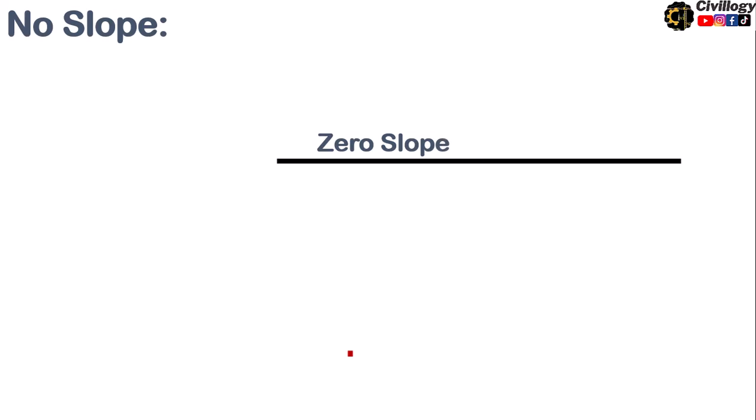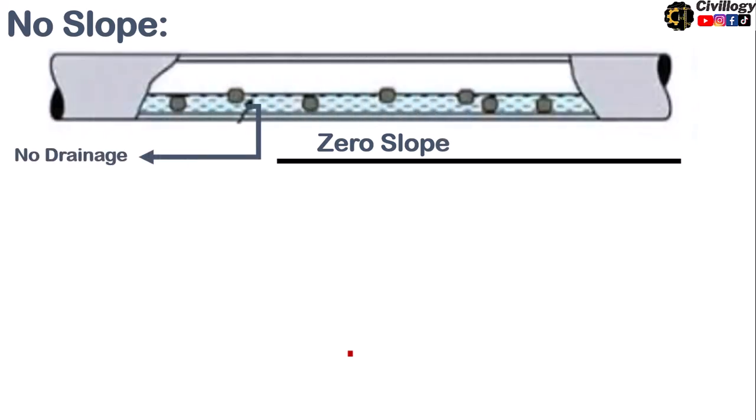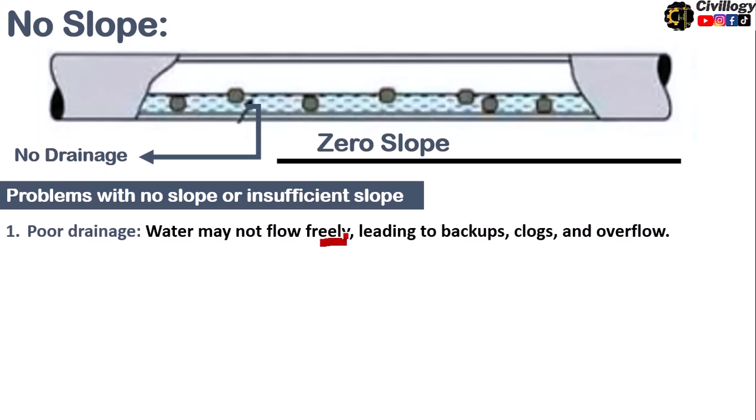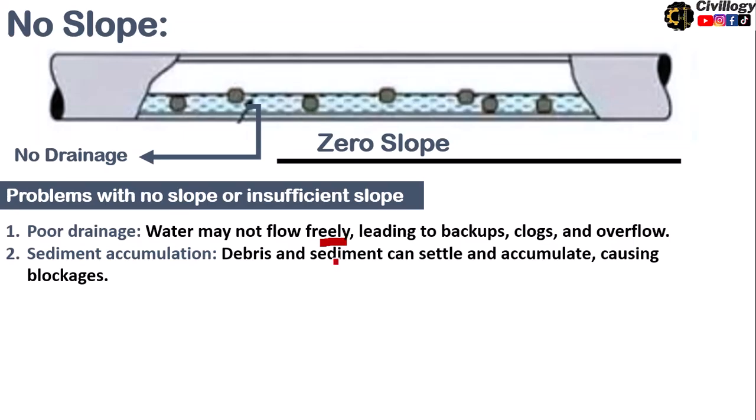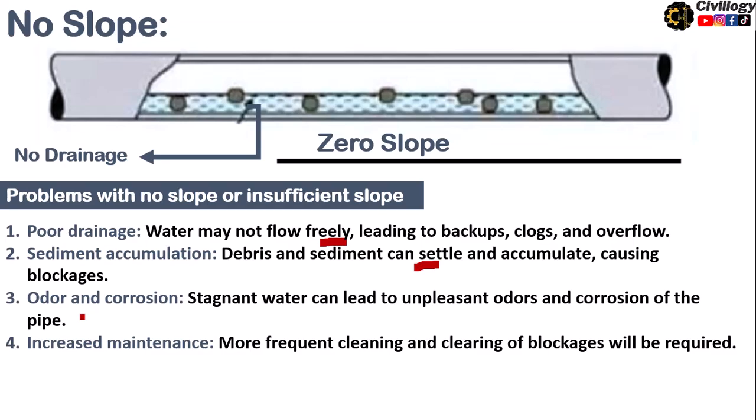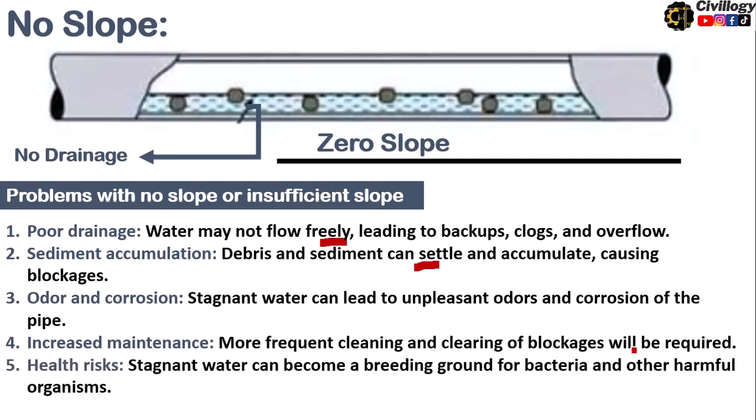These points must be considered before selecting a slope. Now, if there is no slope in the pipe or you can say there is zero slope in the pipe then there will be no drainage. And there are some problems which are associated with no slope or insufficient slope. The first one is poor drainage. Water may not flow freely leading to backups, clogs and overflow. Sediment accumulation. Debris and sediment can settle and accumulate causing blockages. The third problem is odor and corrosion. Stagnant water can lead to unpleasant odors and corrosion of the pipe. The fourth problem associated with zero slope is increased maintenance. More frequent cleaning and clearing of blockages will be required which will in result increase your cost. The fifth point is health risk. Stagnant water can become breeding ground for bacteria and other harmful organisms.